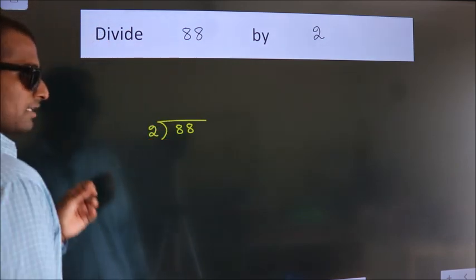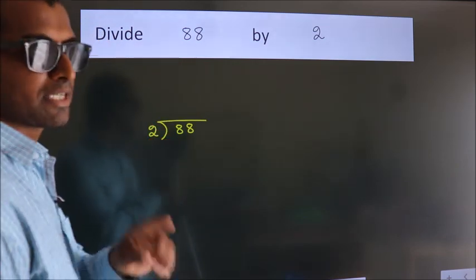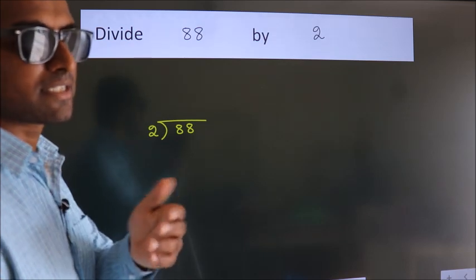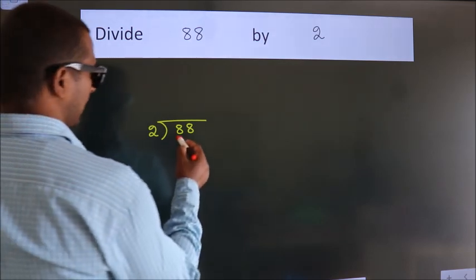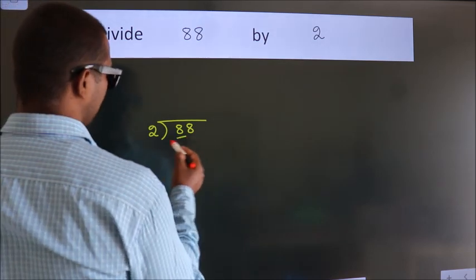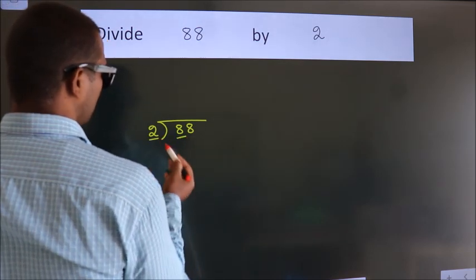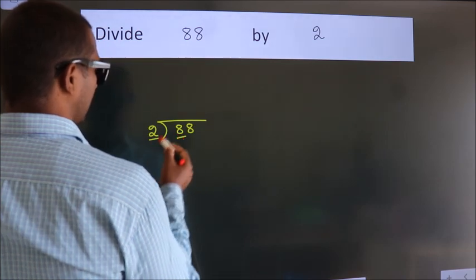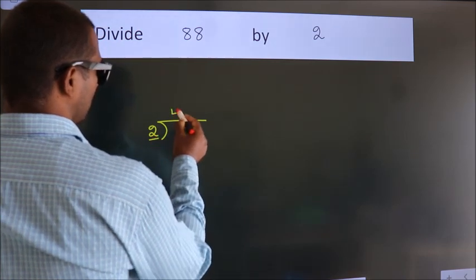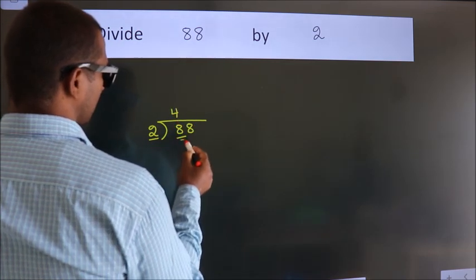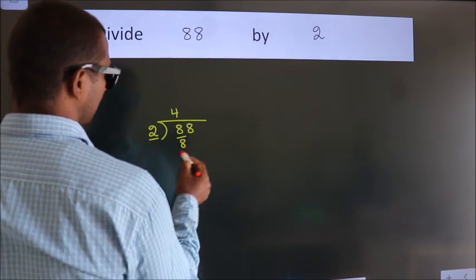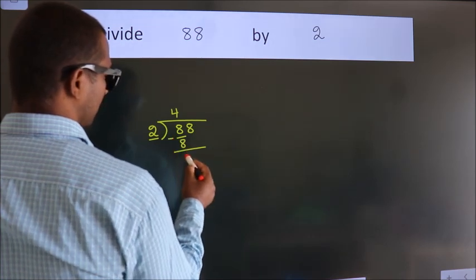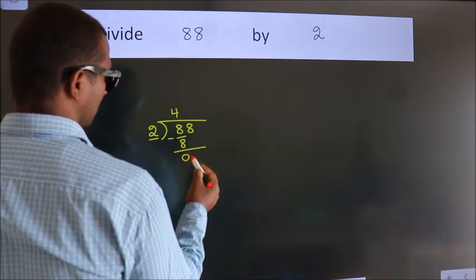This is your step 1. Here we have 8, and here 2. When do we get 8? In the 2 table, 2 fours are 8. Now we should subtract — we get 0.